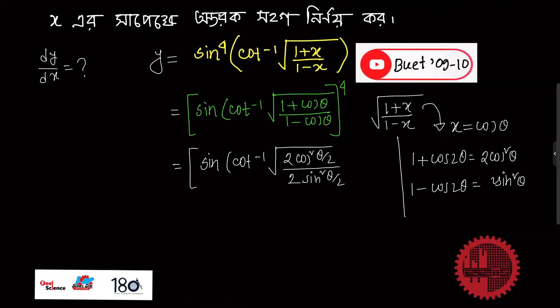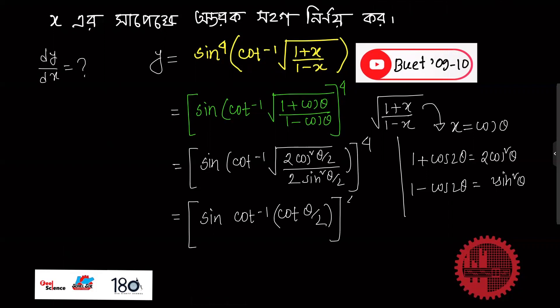So 1 plus cos theta is 2 cos squared (theta/2) divided by 1 minus cos theta which is 2 sin squared (theta/2). We have sin to the power 4 of (theta/2).